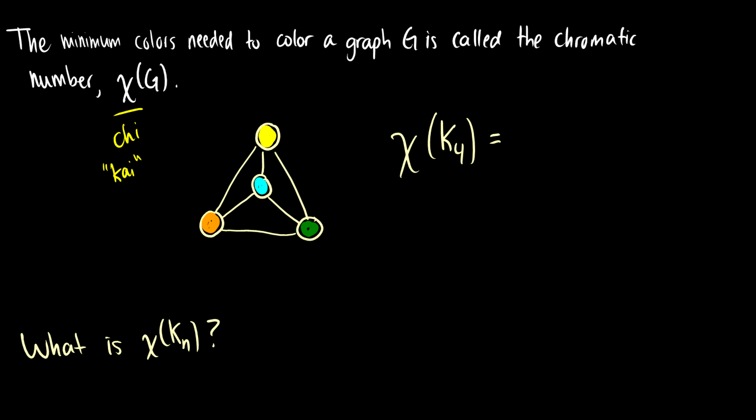Because each vertex in K4 is connected to every other vertex, the chromatic number of K4 is 4. Generalizing this, the chromatic number of K_n is n, because each vertex is connected to every other vertex and two connected vertices cannot share a color.